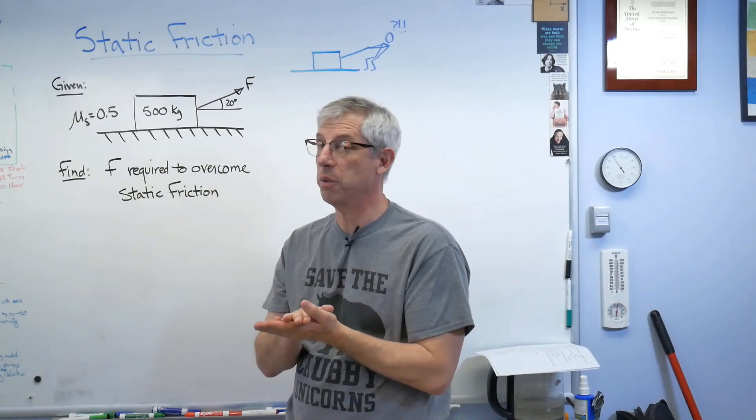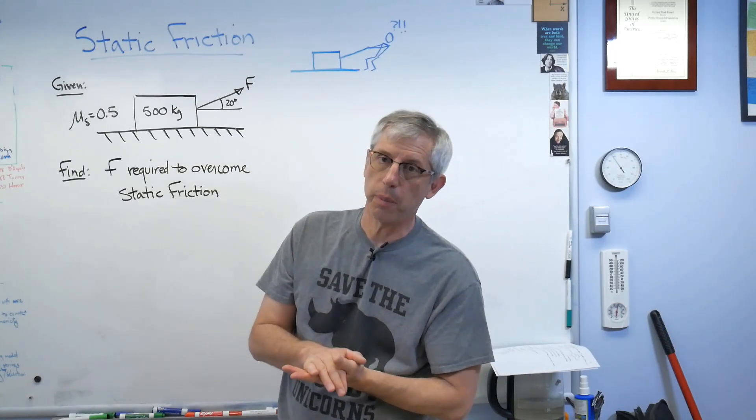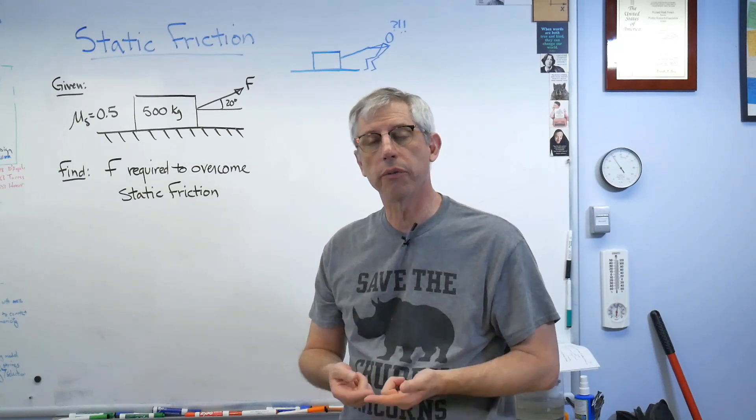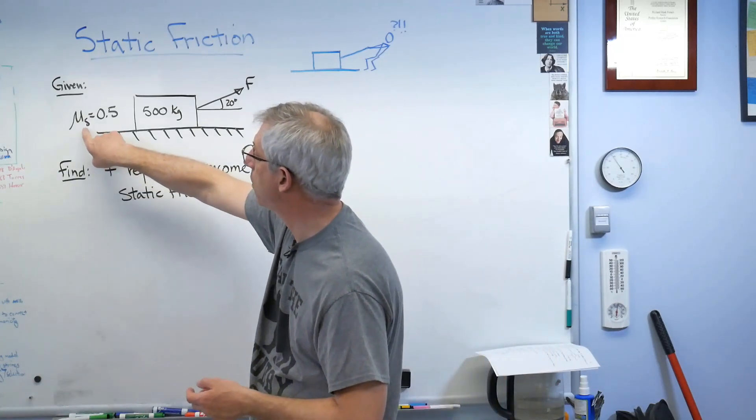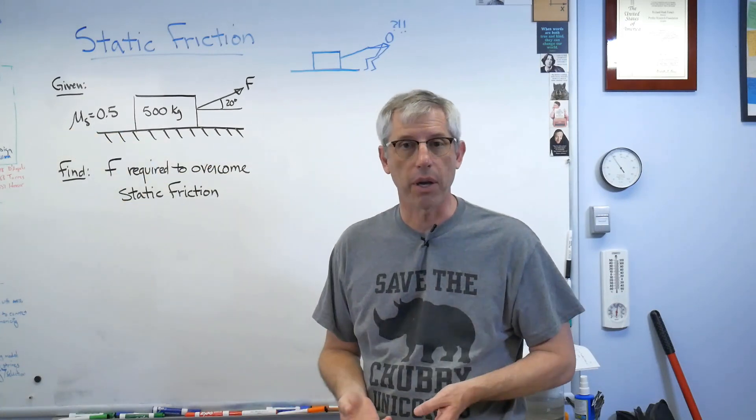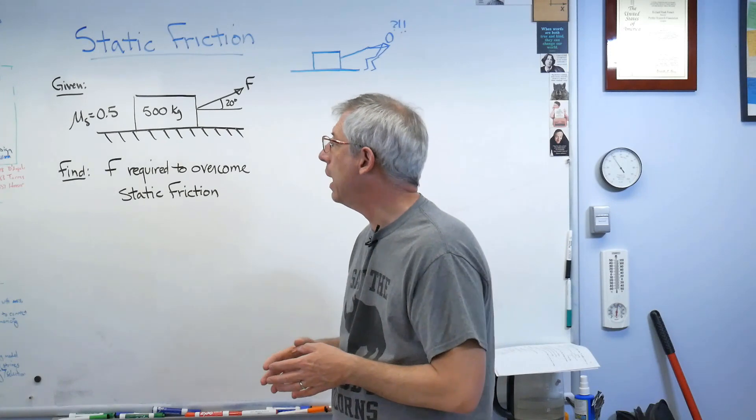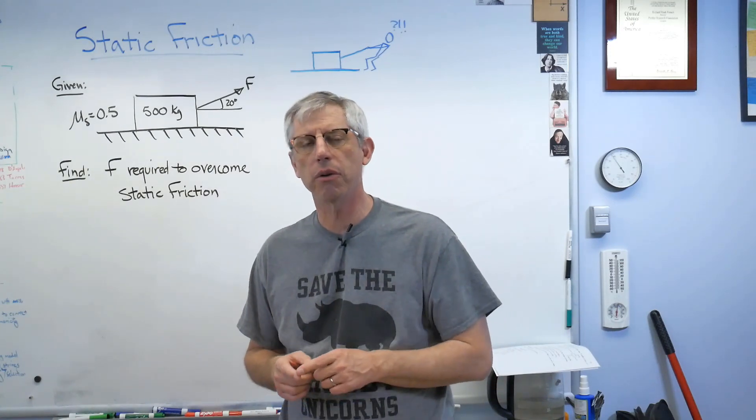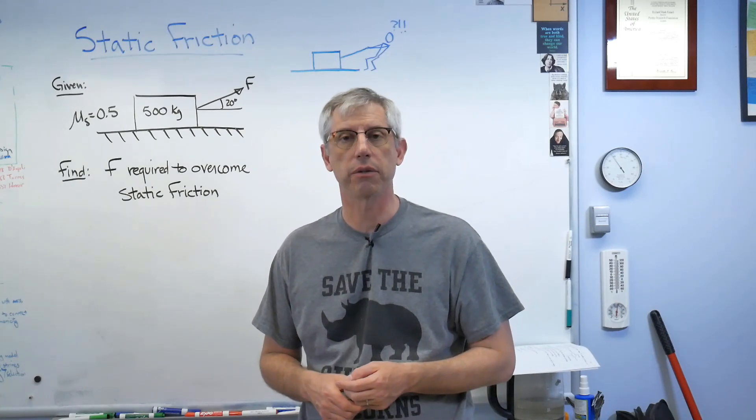Dynamic friction is when the wheel is sliding with respect to the ground. And many of us have experienced this. So we have two coefficients of friction: a static coefficient of friction, mu sub s, and a dynamic coefficient of friction, mu sub d. And here's the thing. Dynamic coefficient of friction is usually lower than static coefficient of friction.